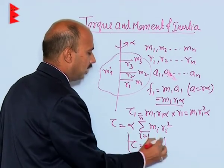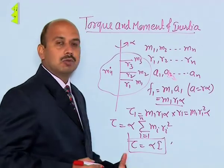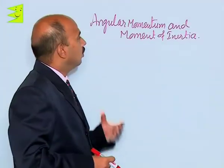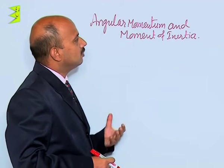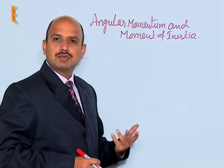This summation can be written as I. So torque is equal to I·alpha. This is the relation between torque and moment of inertia.